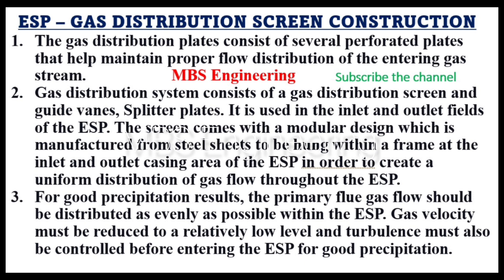The screen comes with a modular design, which is manufactured from steel sheets to be hung within a frame at the inlet and outlet casing area of the ESP, in order to create a uniform distribution of gas flow throughout the ESP. Point 3: For good precipitation results, the primary flue gas flow should be distributed as evenly as possible within the ESP. Gas velocity must be reduced to a relatively low level and turbulence must also be controlled before entering the ESP for good precipitation.